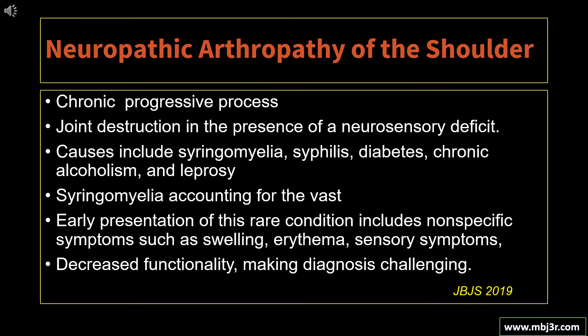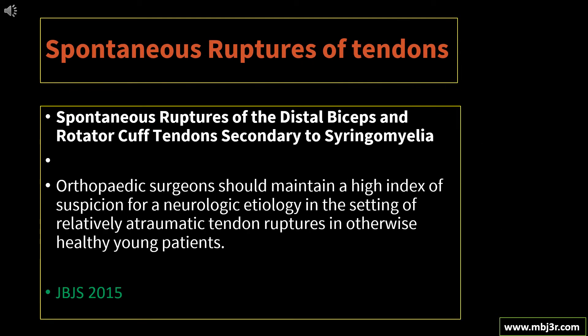Neuropathic arthropathy of the shoulder is a chronic, progressive process characterized by joint destruction in the presence of neurosensory deficit. Causes include syringomyelia, syphilis, diabetes, cervical cord lesions, and leprosy, with syringomyelia accounting for the vast majority of upper extremity Charcot joints. Early presentation includes non-specific symptoms such as swelling, erythema, sensory symptoms, and decreased functionality. Spontaneous ruptures of the distal biceps and rotator cuff tendons have been reported with syringomyelia, and orthopedic surgeons should maintain a high index of suspicion for neuropathic etiology in relatively atraumatic tendon ruptures in otherwise healthy young patients.